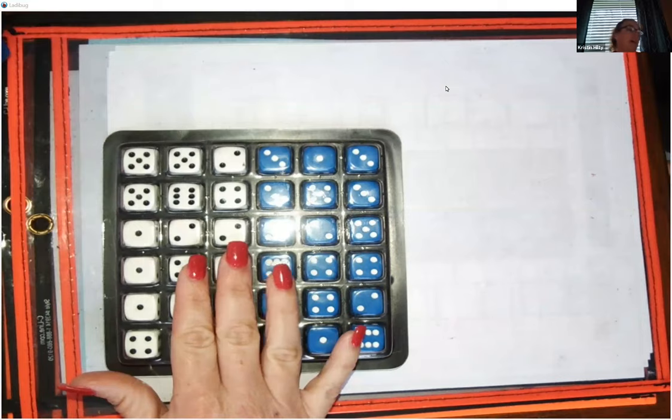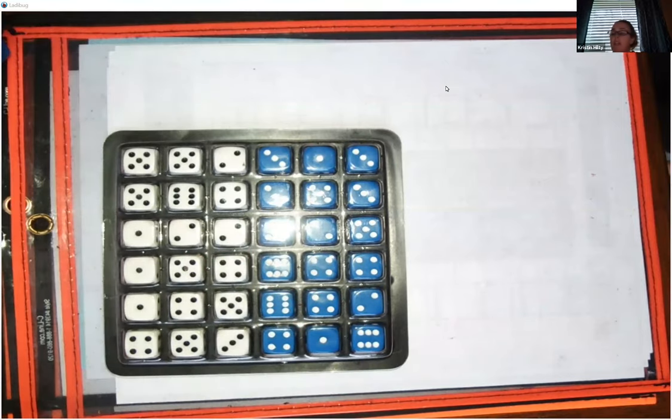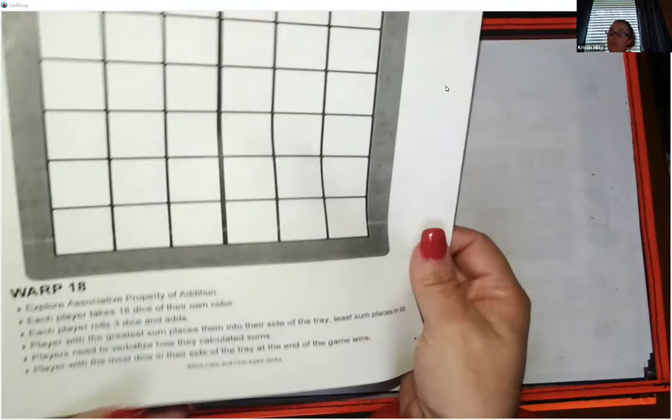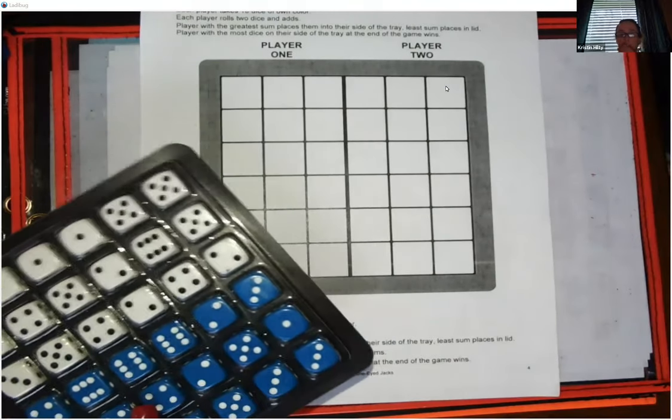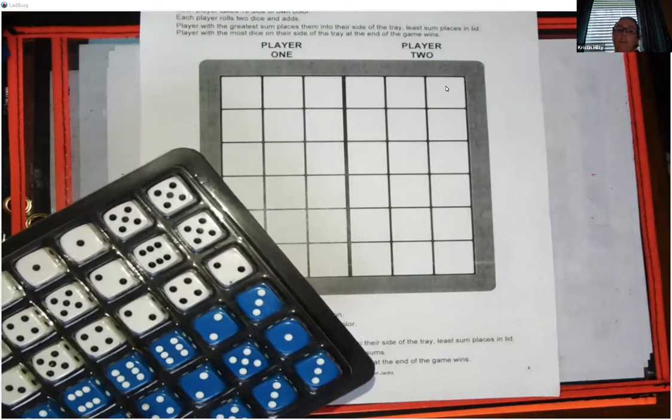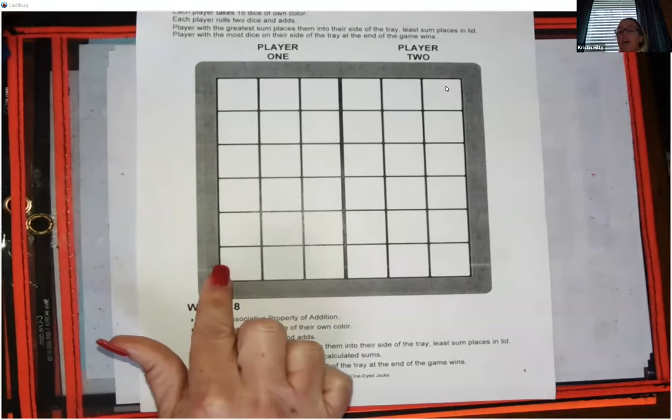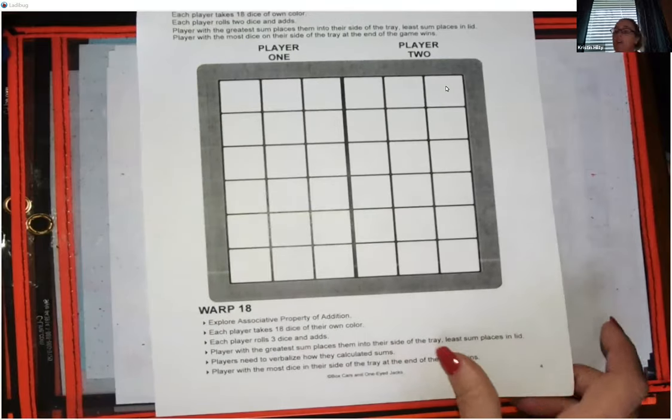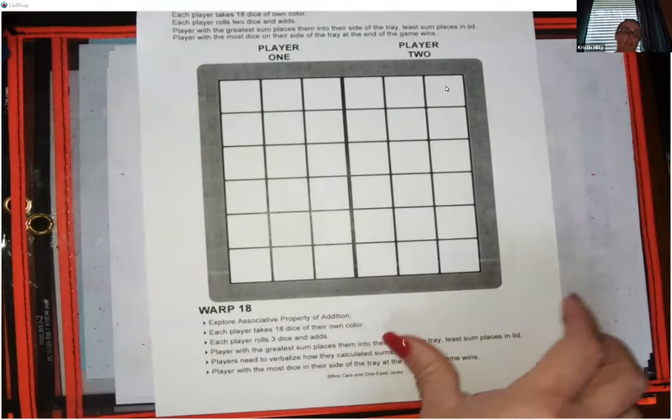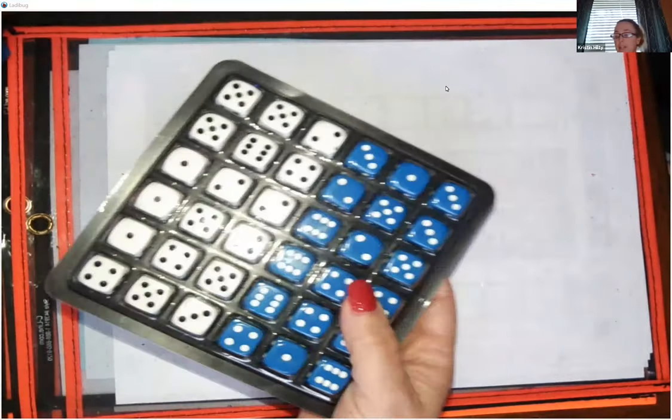However, I've also included, attached to this, the game board for Horse Race that you will be able to download. So if you don't actually have the dice tray, once Megan and I show you how to play the game, you'll see that you can use just the game board, and you'll be able to use this at your house with just regular dice. So stay tuned for that. I'll show you that after we demonstrate how to play, if you don't have one of these trays at your house.